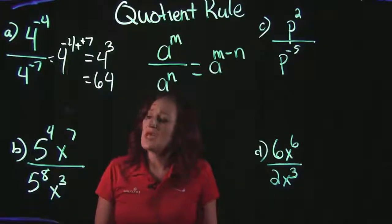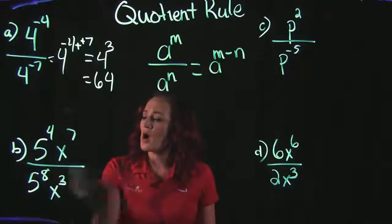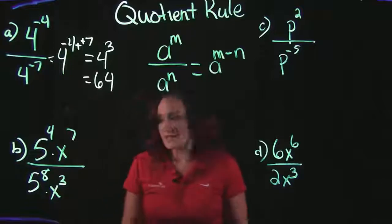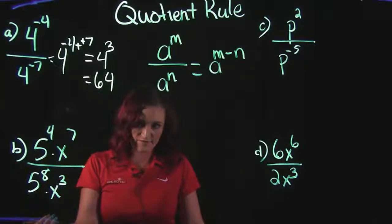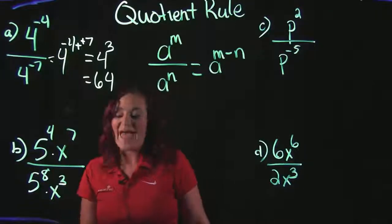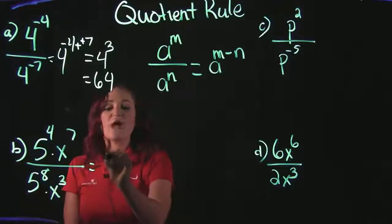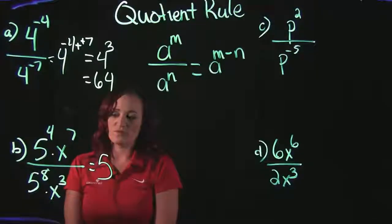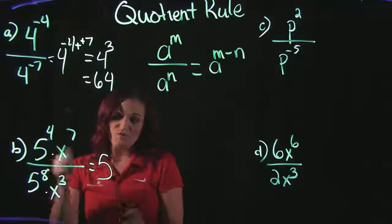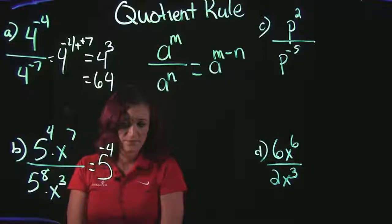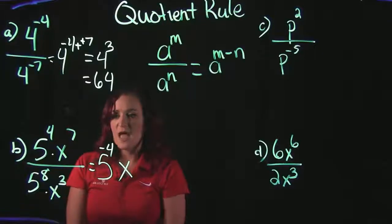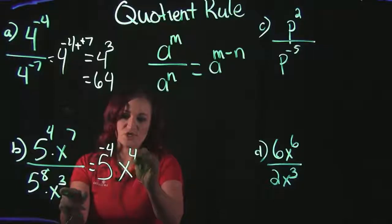Moving over to example B, we're still using the quotient rule. We are using division here. The only difference with this one is that we're talking about two different bases. So we're going to be using the quotient rule to divide the fives, and then we're going to use the quotient rule all over again to divide the x's. So we're going to bring our base over, subtracting our exponents, 4 minus 8. 4 minus 8 is negative 4. Also subtracting our x's, so I'm going to bring over the x. And we're going to do 7 minus 3, which is a 4.